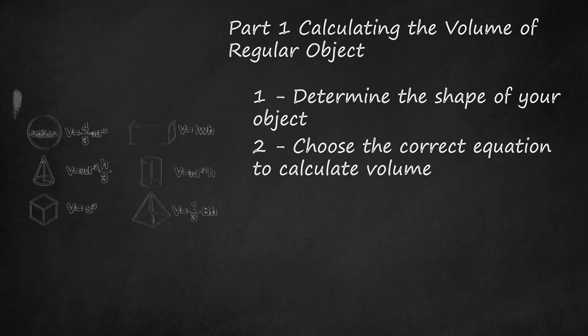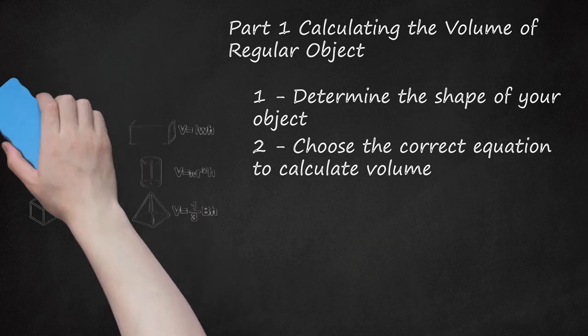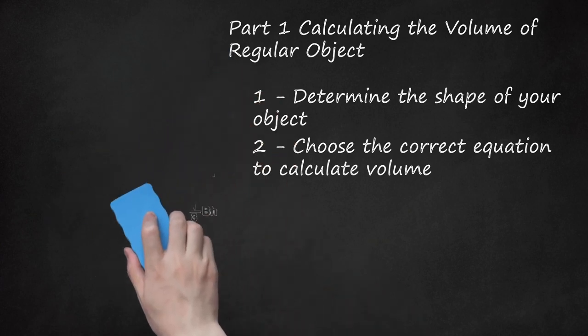Pyramid: V = 1/3bh, where b is the area of the base of the pyramid and h is the height of the pyramid.